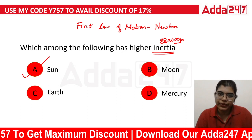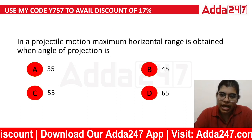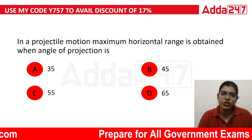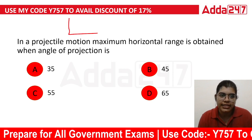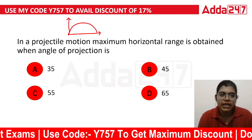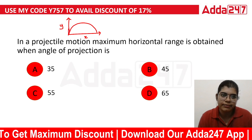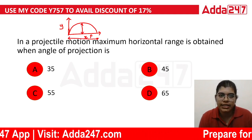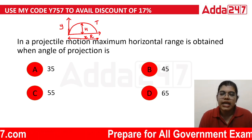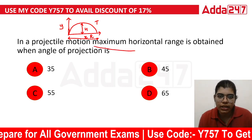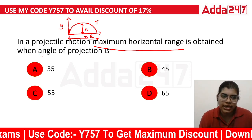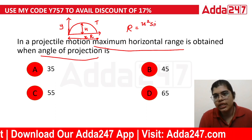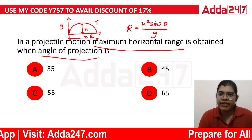Next question: In a projectile motion, maximum horizontal range is obtained when the angle of projection is dash. This question is repeatedly asked in PSC exams. In projectile motion, we have maximum height, time of flight, and horizontal range. This question is about maximum horizontal range.